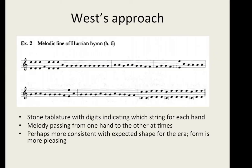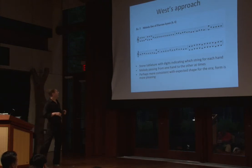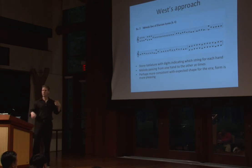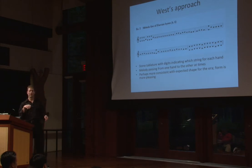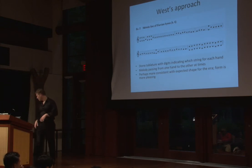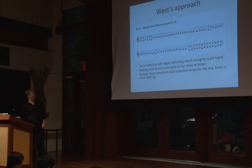ML West had a different approach to interpreting the information from the tablet. He thought that where the numbers appeared, they were telling you which string to play and which hand to play it with. This would allow the melody to pass from one hand to the other at times, and would be more consistent with the shape of a melody you'd expect from other ancient civilizations. In this case, some notes are doubled in octaves, meaning one note is played on the lowest string and the other on the highest string, which boosts the volume of the lowest note.